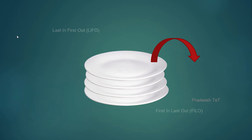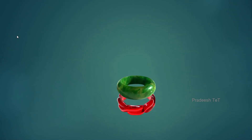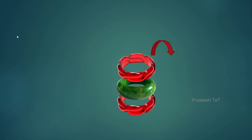Another example is a stack of chairs. Most of us from the 90s used chairs stacked in school. You can add a chair on top, and you remove the top chair first — that is Last In, First Out. Similarly, with bangles, you add them one by one and remove the first one added last.